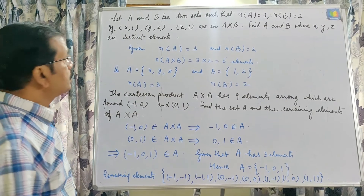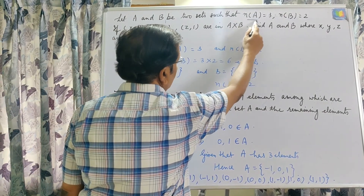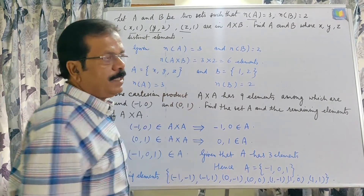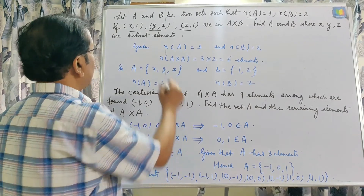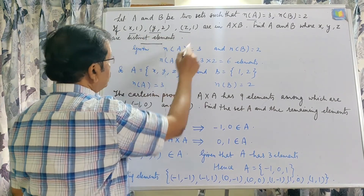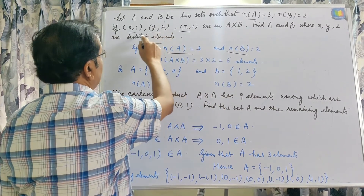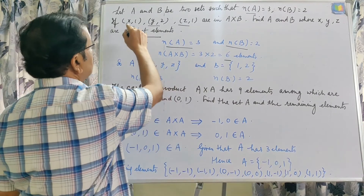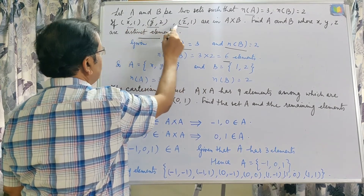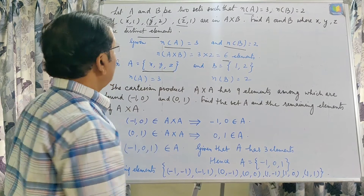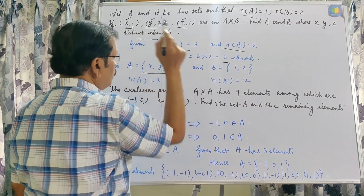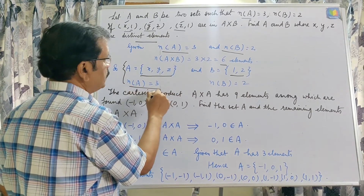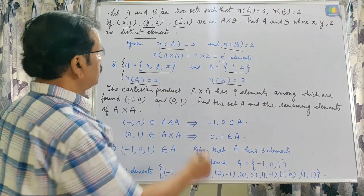In the next question, A and B are two sets such that N(A) = 3 and N(B) = 2. If (X,1), (Y,2), and (Z,1) are in A × B, find A and B, where X, Y, Z are distinct elements. N(A × B) = 3 × 2 = 6 elements. The first elements come from A, so A = {X, Y, Z}, and the second elements come from B, so B = {1, 2}. This is verified since N(A) = 3 and N(B) = 2.